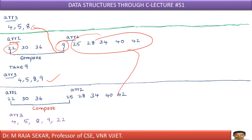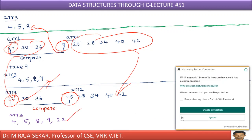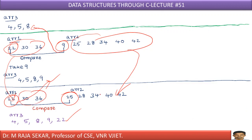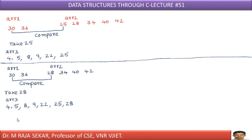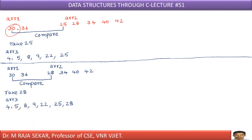The remaining elements — 22, 30, 36 from arr1 and 25 onwards from arr2 — go to the next stage. Comparing 22 and 25: 22 is smaller, so 22 goes into arr3, giving us 4, 5, 8, 9, 22. Then comparing 30 and 25: 25 is smaller, so 25 is added. Then comparing 30 and 28: 28 is smaller, so after 25 we get 28.